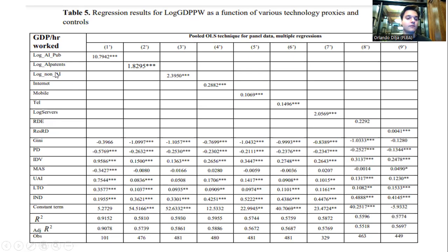So again, for AI publications, we have a coefficient of 10.80. For AI patents, we have a coefficient of 1.83, and for non-AI patents, we have a 2.40 coefficient.